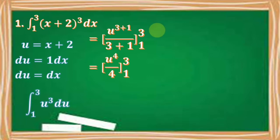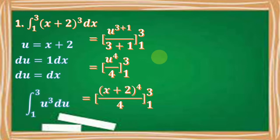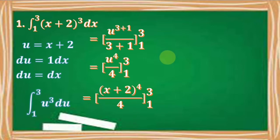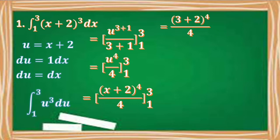We will now replace u by x plus 2, giving us x plus 2 to the 4th over 4 from 1 to 3. Solving for the upper limit by replacing x by 3, we have the quantity 3 plus 2 to the 4th over 4. Since 3 plus 2 equals 5, we have 5 to the 4th over 4, which equals 156.25.